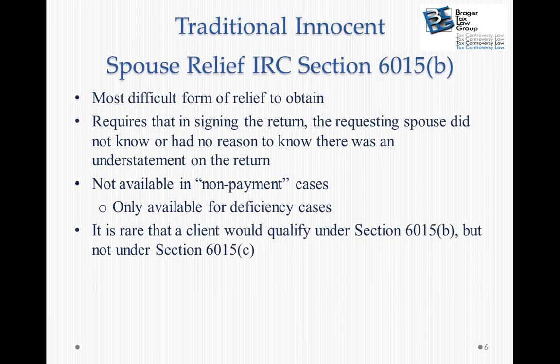Traditional innocent spouse relief is the most difficult form to obtain. It requires that in signing the return, the requesting spouse did not know or had no reason to know that there was an understatement of tax on the return. For example, if the husband didn't report all of the income, but the wife, in inspecting the tax returns, saw that only $50,000 of income had been reported, yet they were living in a mansion in Beverly Hills, the court would likely say she had reason to know.